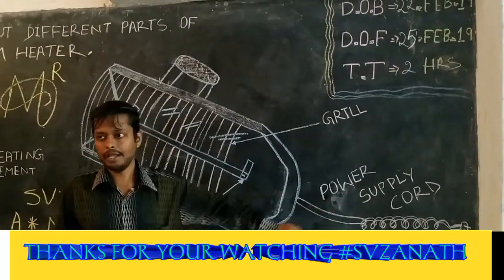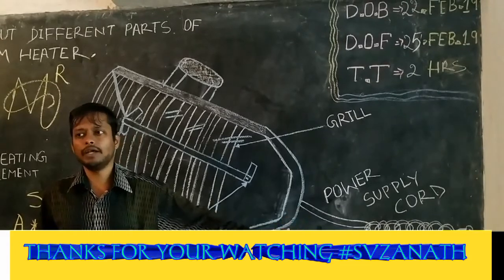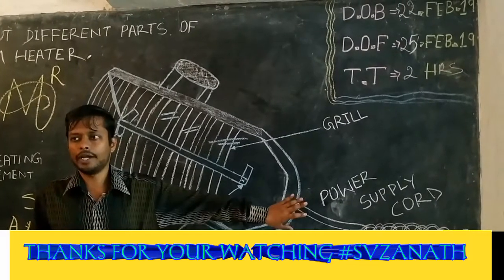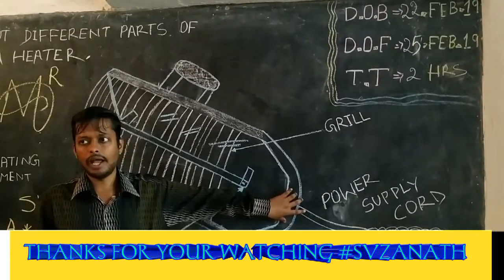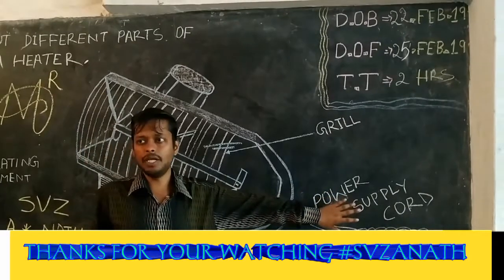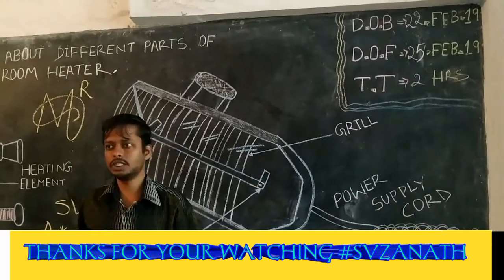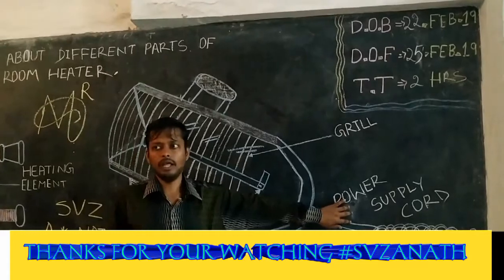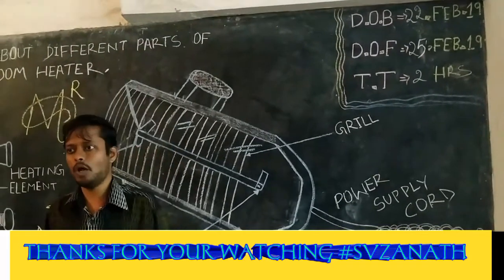The last part of the rod type room heater is the power supply cord. Power supply cord is connected with the heating element and with single phase supply. It consists of two numbers of copper wire and a three pin plug.